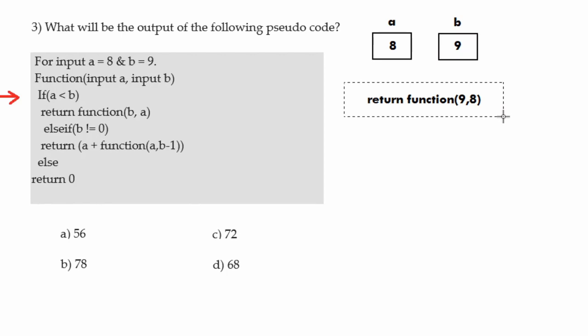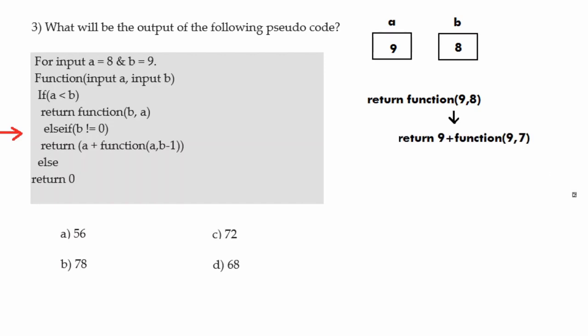Function(9, 8) calls itself and tests if a less than b. Now a is 9 and b is 8, so 9 less than 8 is false. We move to else-if: b not equal to 0, which is true since b is 8. So the statement 'return a plus function(a, b minus 1)' is executed, becoming 'return 9 plus function(9, 7)', passing b minus 1 as the second argument.